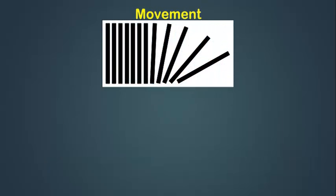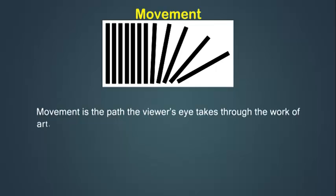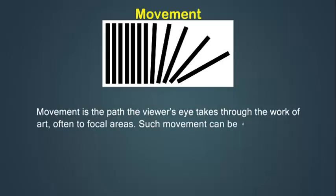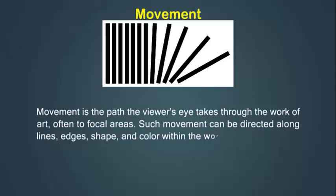Movement is the path the viewer's eye takes through the work of art, often to focal areas. Such movement can be directed along lines, edges, shape and color within the work of art.